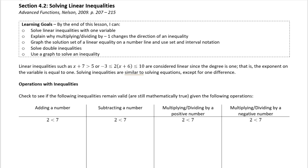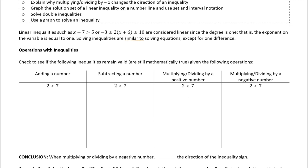Section 4.2: Solving Linear Inequalities. By the end of this lesson, I can solve linear inequalities with one variable, explain why multiplying or dividing by a negative changes the direction of an inequality, graph the solution set on a number line using both set and interval notation, solve double inequalities, and use a graph to solve an inequality. Linear inequalities are considered linear since the degree is 1.